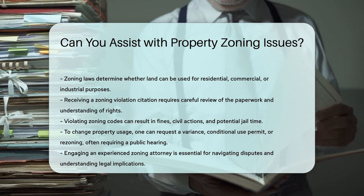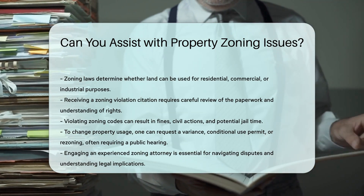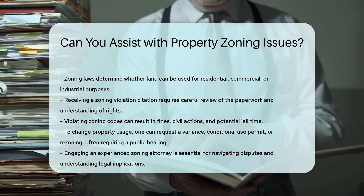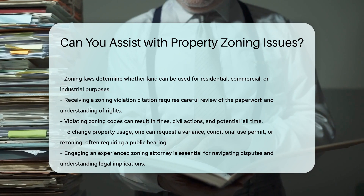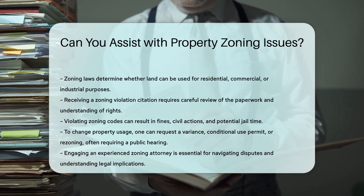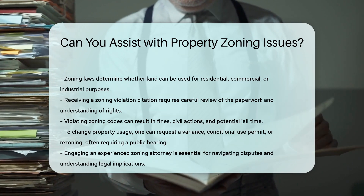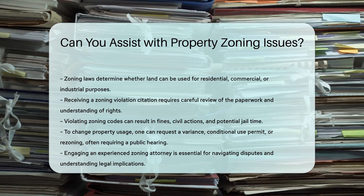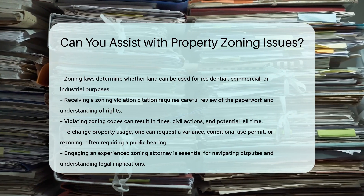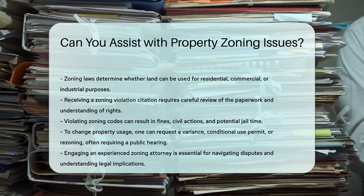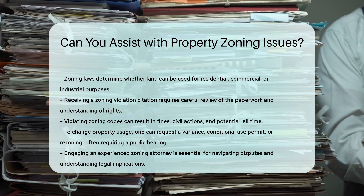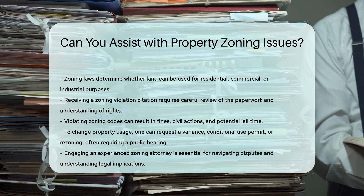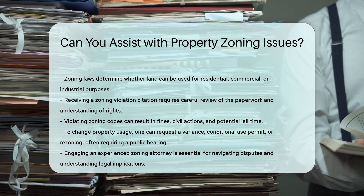Seeking permissions. To use property in a way not permitted by the zoning code, you can request a variance, conditional use permit, or rezoning. This typically involves notice and a public hearing before a government body.